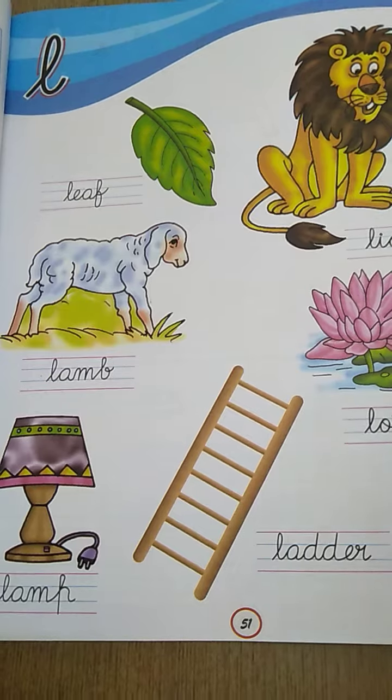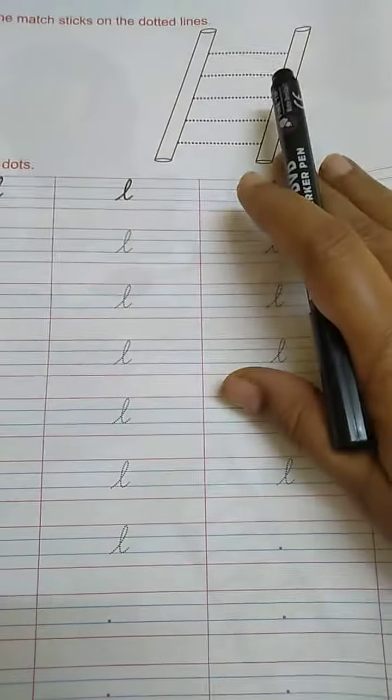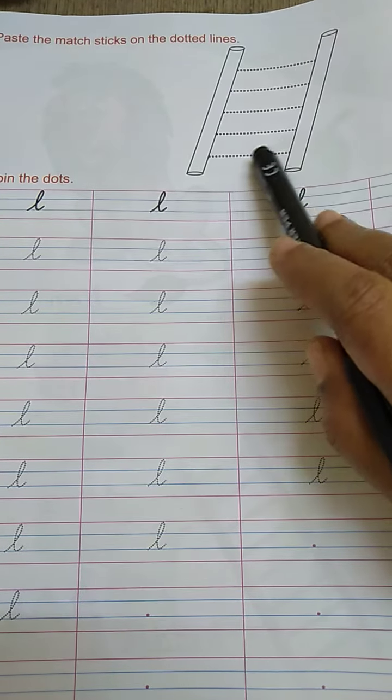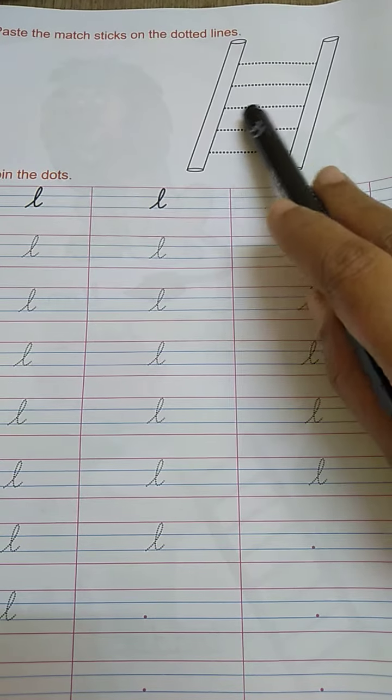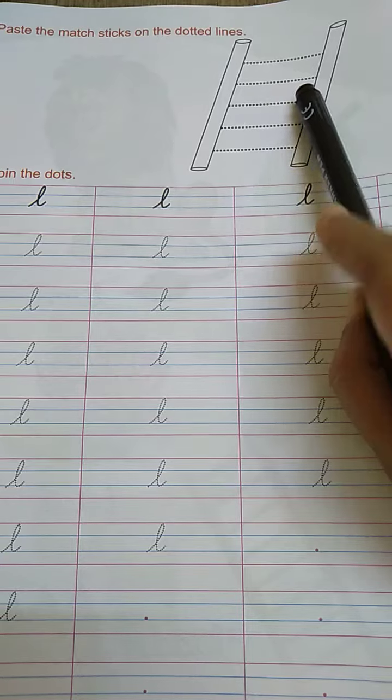Now shall we see how to write the cursive letter? See here children, you have to paste the math sticks on these dotted lines. You can take math sticks or straws. If you don't have both, you can just join the dotted lines with a pencil.